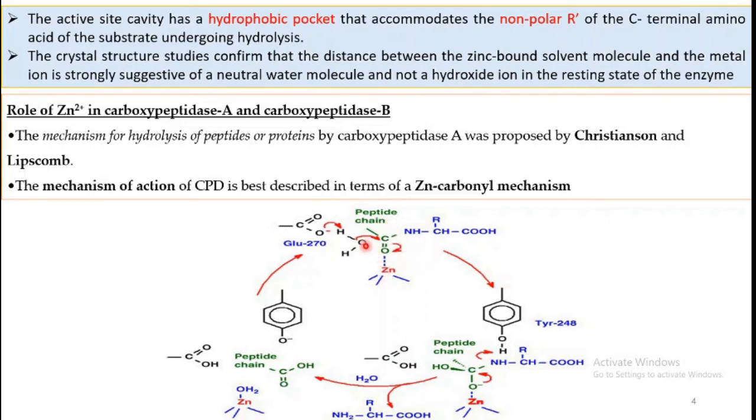The water molecule which has been replaced by this protein chain will be attacked by glutamate 270, so the hydrogen will be taken up by the glutamate carboxylate moiety of glutamate 270, and the water molecule becomes OH⁻. Once this OH⁻ forms, it will attack the carbonyl carbon, and C=O will get converted to C-O⁻ with OH attached to this particular carbon.